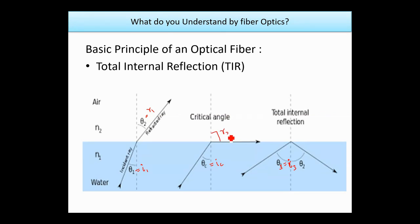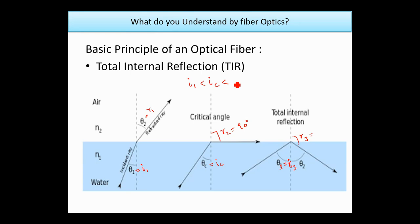So, I1 is less than I2, and I2 is less than I3. The refracted angle R2 is 90 degrees, and R3 is greater than R2.